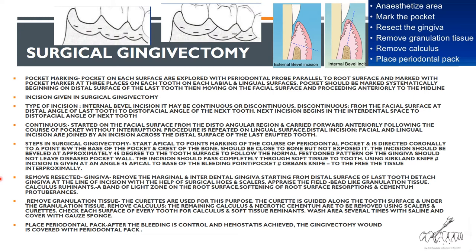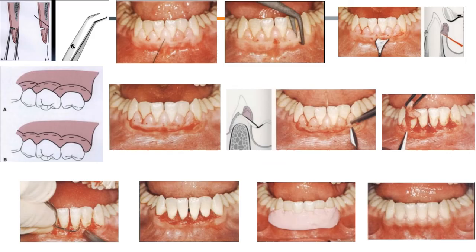After the incisions, the resected gingiva is removed. All granulation tissue is removed, curettage is performed, roots are smoothed, and calculus is removed. The area is washed several times with saline, covered with a gauze sponge, and then covered with a periodontal pack.